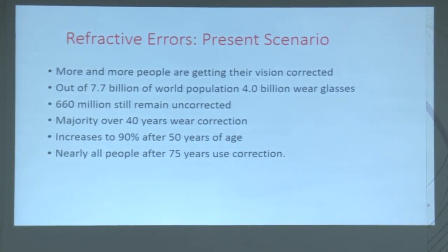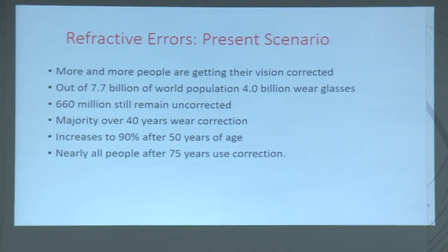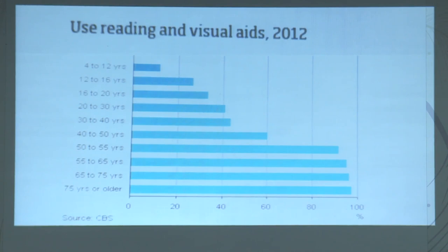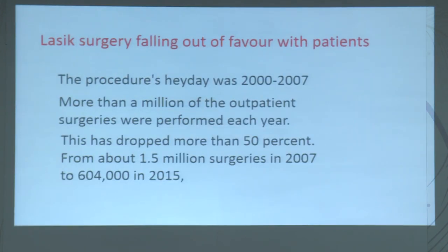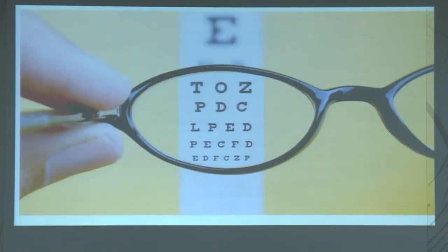Refractive errors — present scenario. More and more people are getting their vision corrected. Out of 7.7 billion world population, 4 billion wear glasses and 660 million remain uncorrected. The majority over 40 years wear correction, increasing to 90% after 50 years of age. Nearly all people after 75 years use correction. As age increases, the number of people wearing glasses increases. LASIK surgery fell out of favor — its heyday was 2000 to 2007, with over a million outpatient surgeries per year. This dropped more than 50% from about 1.5 million surgeries in 2007 to 600,000 in 2015. Spectacles are making a comeback — they are pocket friendly, money wise, and require no hazardous surgery.